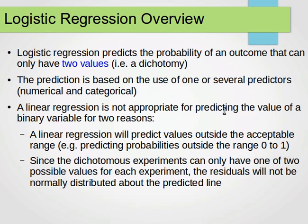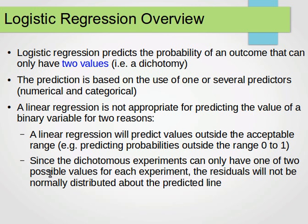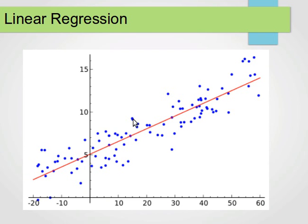A linear regression is not appropriate for predicting the value of a binary variable for two reasons. First, it does not predict probabilities, because probabilities are between 0 and 1, while linear regression predicts real values which can be any value. Second, since dichotomous experiments can only have one of two possible values, the residuals will not be normally distributed about the predicted line. The residuals are the error—we have the real point and the predicted point, and we compute the difference, which is called the residual error.